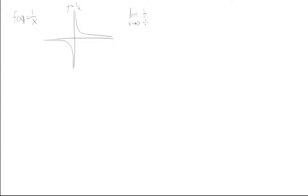The notation we're going to use has three parts: the limit as x goes to 0 of 1/x from the positive side, the limit as x goes to 0 of 1/x from the negative side, and the overall limit. A little positive sign indicates it comes from the right side, and a negative sign indicates it comes from the left side.